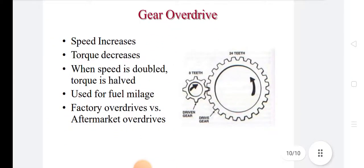Gear overdrive. In gear overdrive, speed increases, torque decreases. When speed is double, torque is half. Use for fuel mileages. Factory overdrive versus aftermarket overdrive.